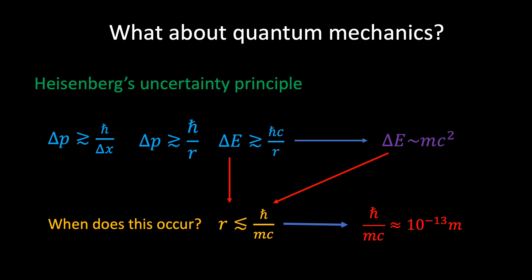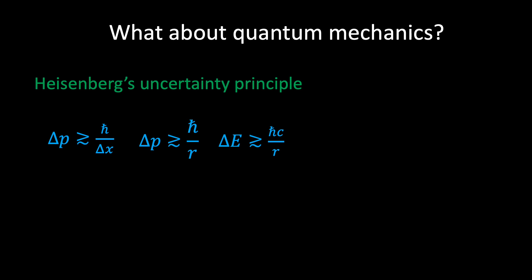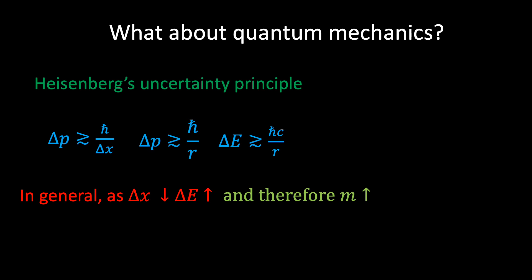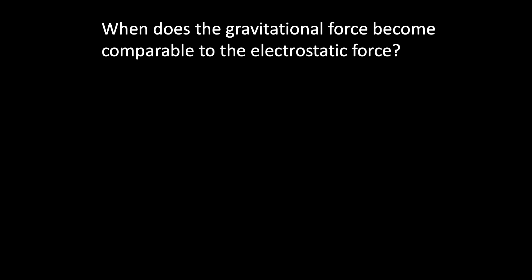So the natural question to then ask is what happens if we continue pushing the two electrons even closer together still? We have already seen that Heisenberg's uncertainty principle tells us that as Δx gets smaller, ΔE will get larger. And Einstein tells us that this is equivalent to adding more mass to our system. Because gravity talks to mass, the strength of the gravitational force will also start to increase, and therefore our ratio of forces will no longer remain at 10 to the power of 42. As the electrons are squeezed closer and closer together, the gravitational force will get relatively stronger and the ratio will start decreasing. So the next question is: at what separation will this ratio become equal to 1?